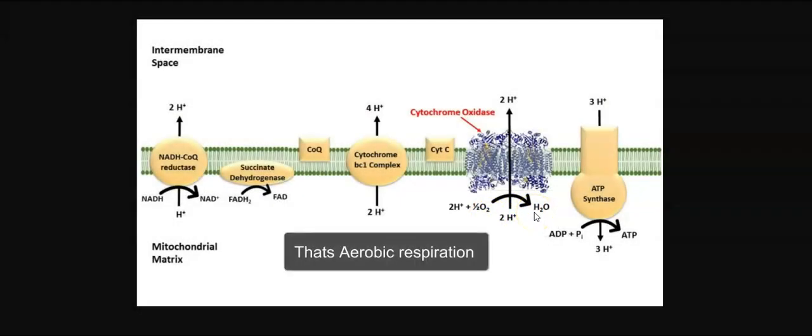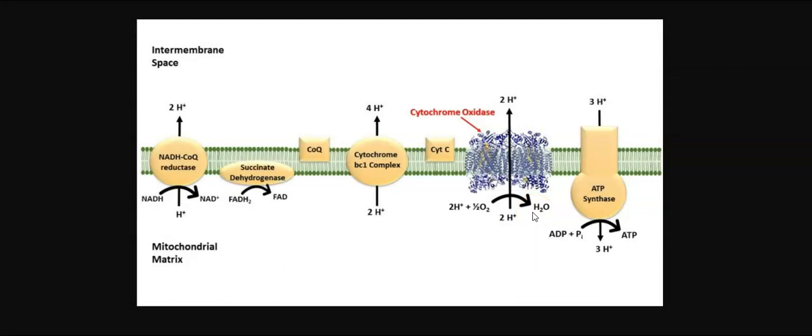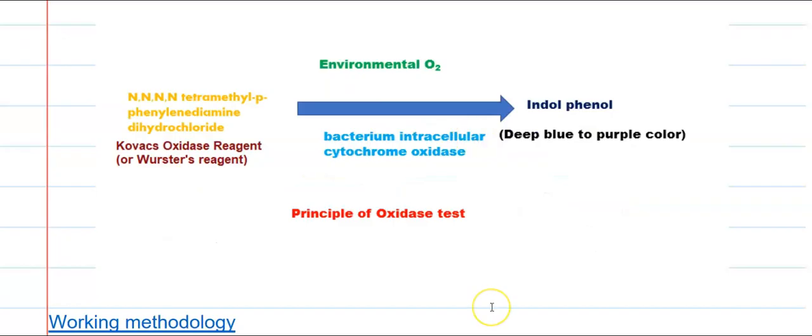This is the final process in aerobic respiration. In this testing, we are going to see whether an organism possesses the cytochrome oxidase enzyme. The principle is that cytochrome oxidase accepts the electron from the previous enzyme in the electron transport chain — cytochrome C. From cytochrome C, the electron is transferred to cytochrome oxidase, and from there it is transferred to the oxygen molecule, by which oxygen is reduced to water.